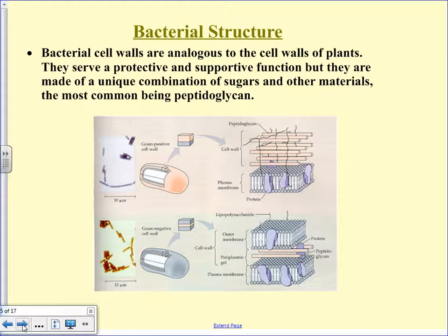Bacterial cell walls are analogous to the cell walls of a plant — they serve a protective and supportive function, but they're made of different stuff. They're made of peptidoglycan, a kind of protein-like sugar that goes over top of the membrane. If you have a penicillin-resistant bacteria, they have a membrane, their cell wall, and another membrane — that outer membrane cloaks the cell wall and makes it difficult for penicillin to break it down.